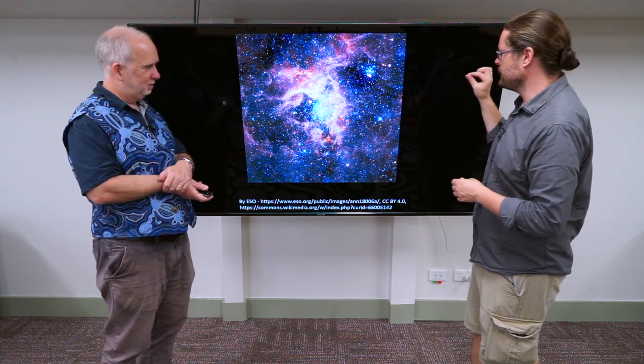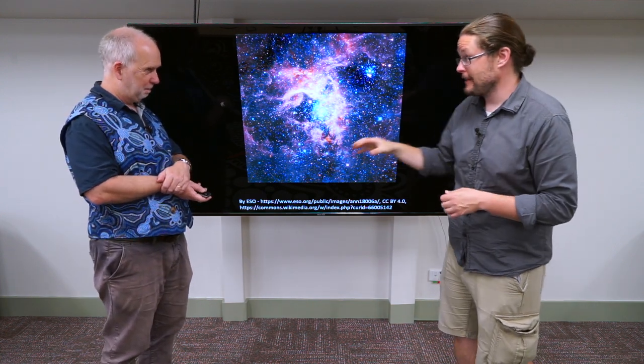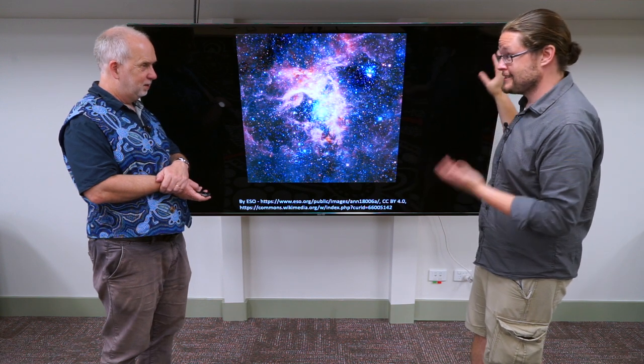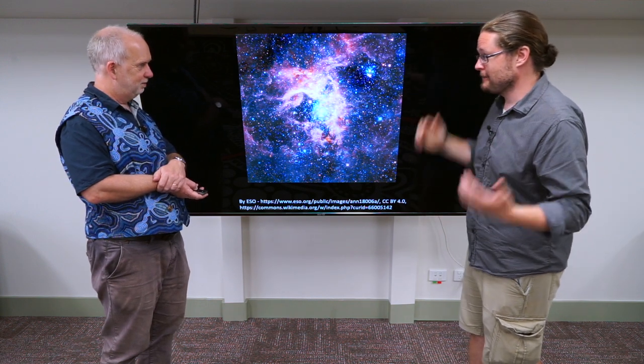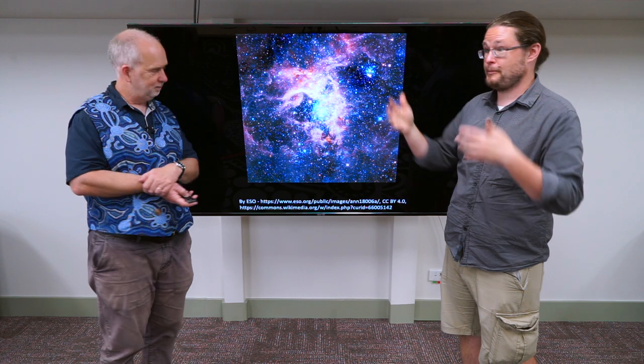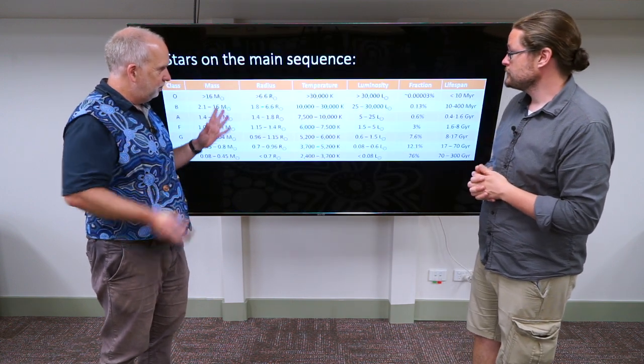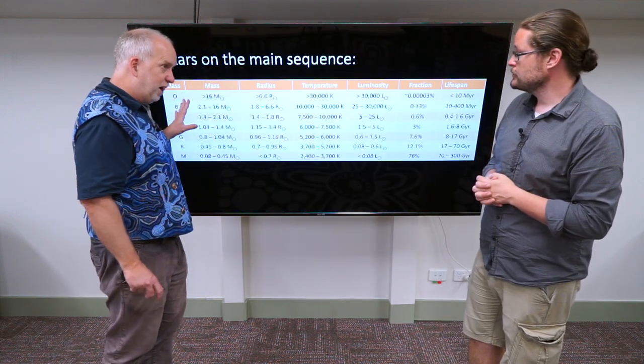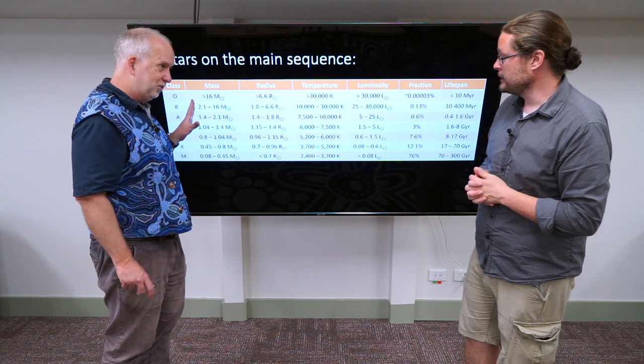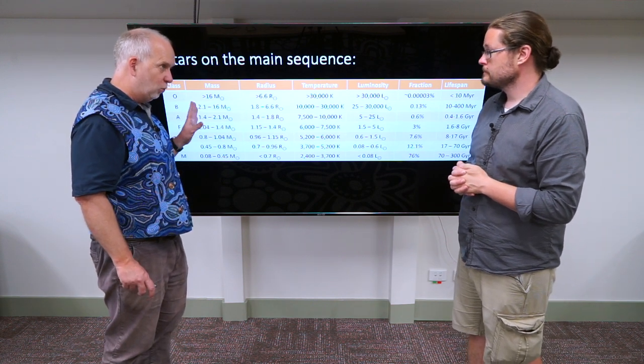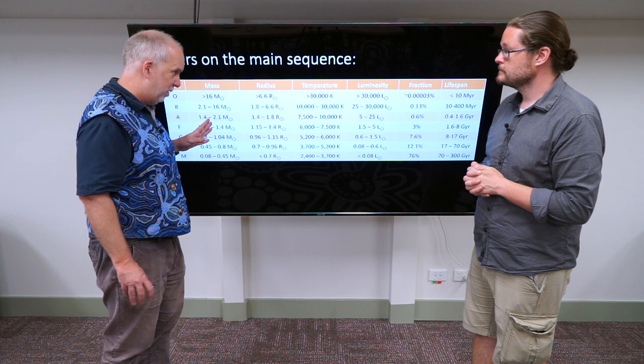So I guess because these stars that are 16 times the mass of our Sun are only lasting less than ten million years, if you get something that's a hundred or a thousand, they're gonna be around for not even a million years. Yeah, so they're very bright, so we can see them at enormous distances. There are a lot of them out there that we can see, but they're actually vanishingly rare.